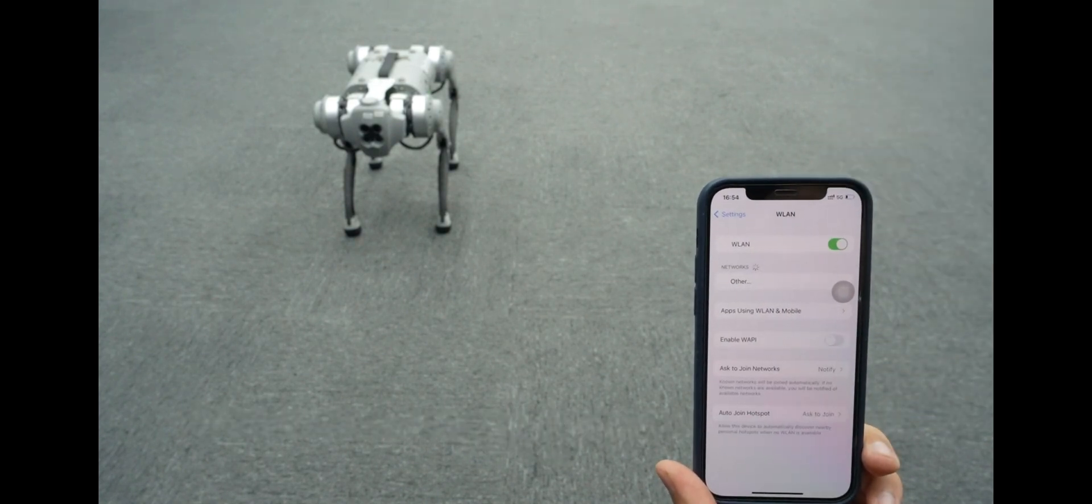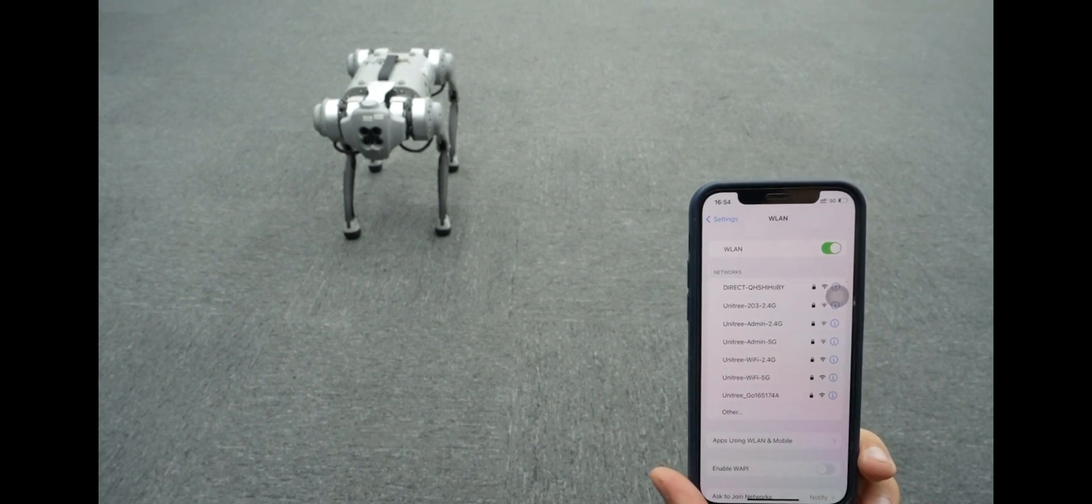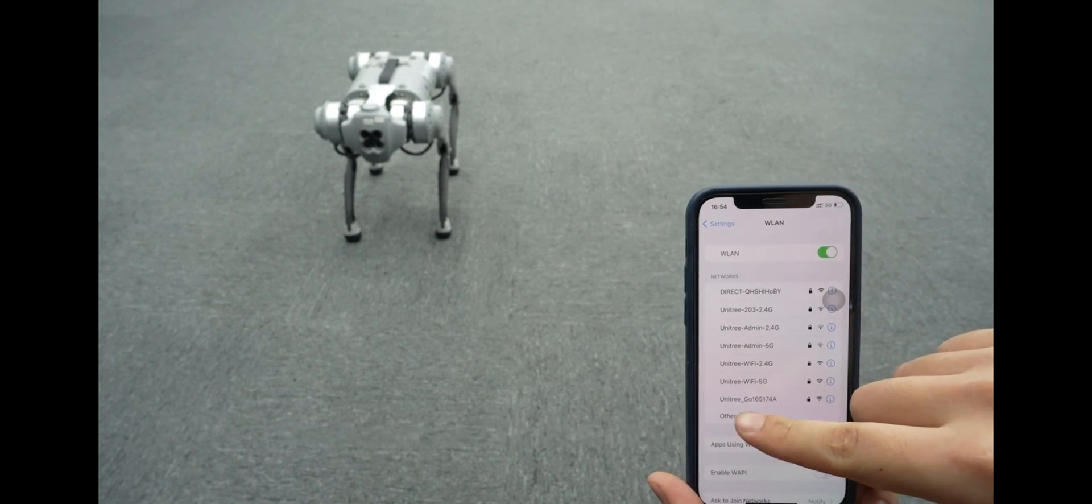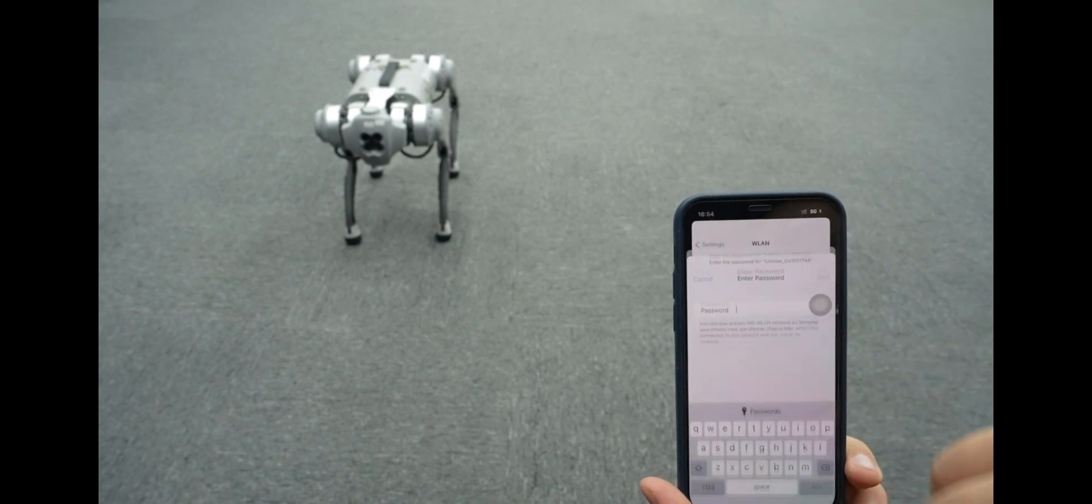Turn on the WiFi, waiting for the WiFi coming up. As you can see here, there is a WiFi code, Unitree Go 165174A, click it.